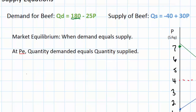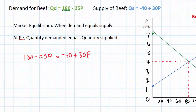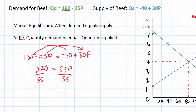The demand for beef is represented by the equation 180 minus 25P, and the supply of beef is represented by the equation negative 40 plus 30P. All we have to do now is solve for P in this equation and we will know at which price the two are equal to each other. Sure enough, it turns out that the equilibrium price of beef is exactly $4, found by setting the demand and supply equations equal to each other and solving for P.